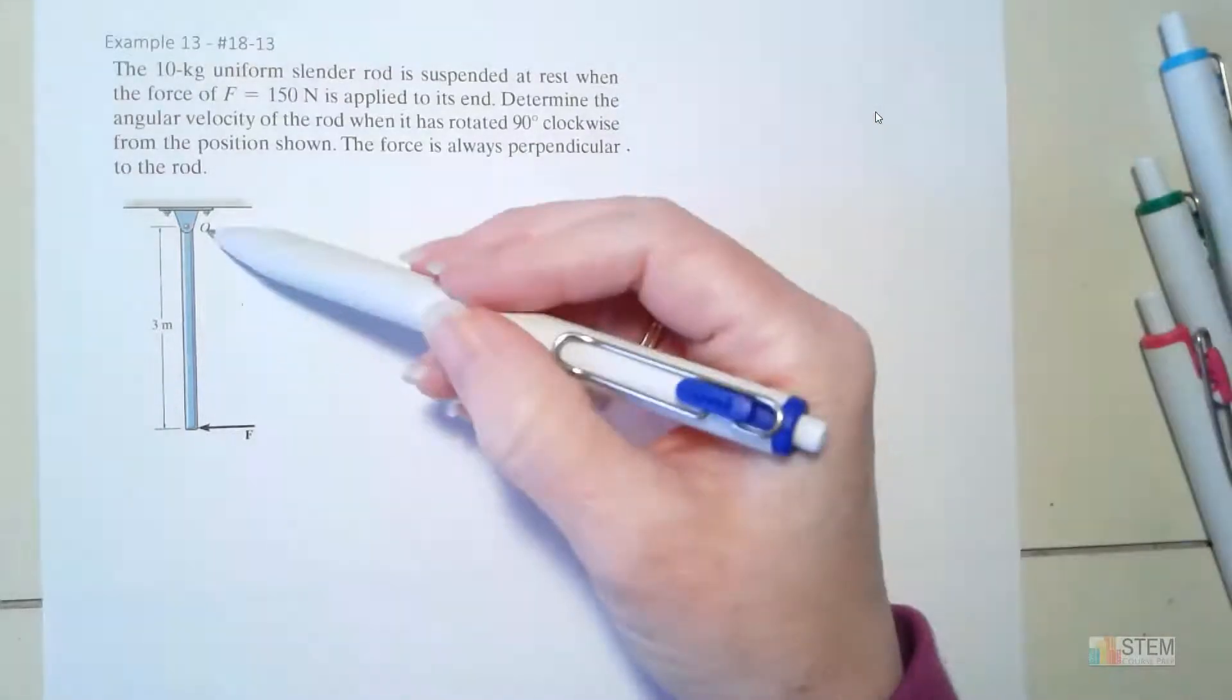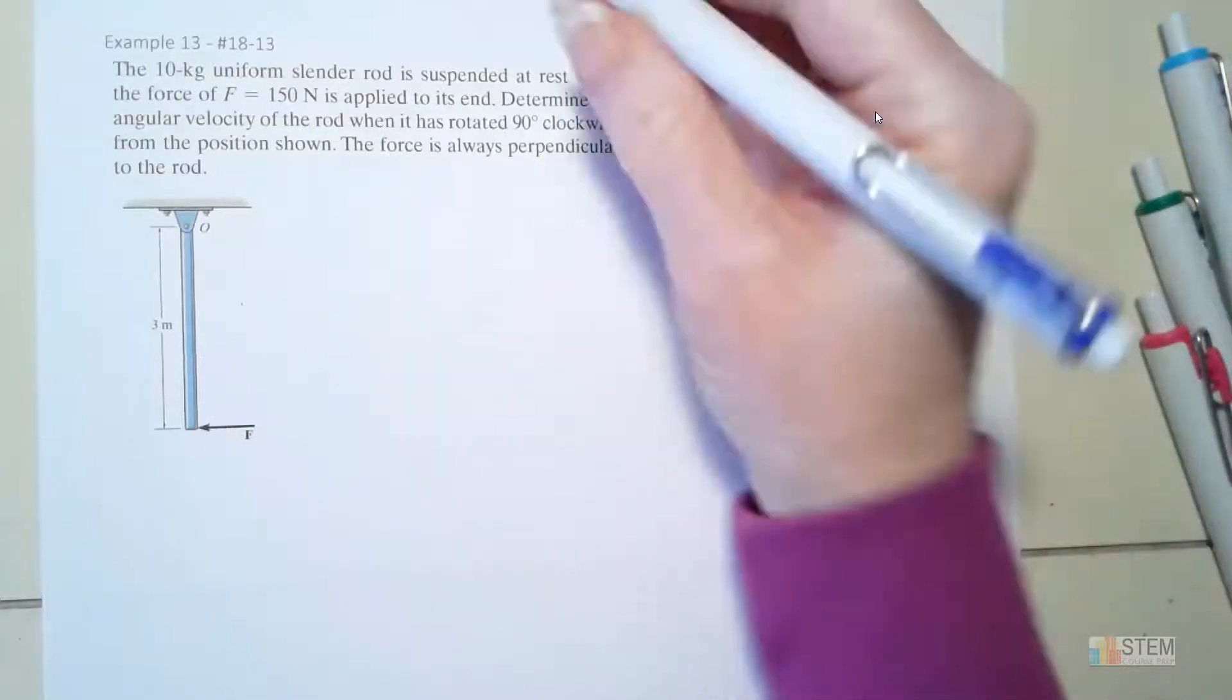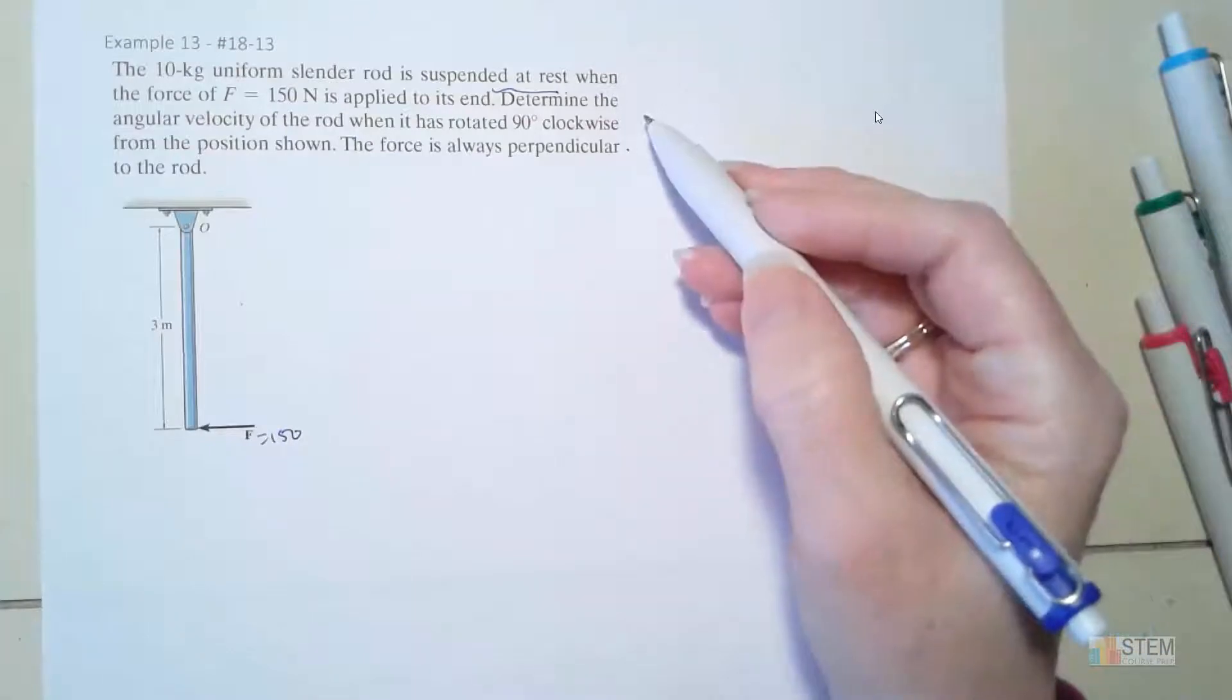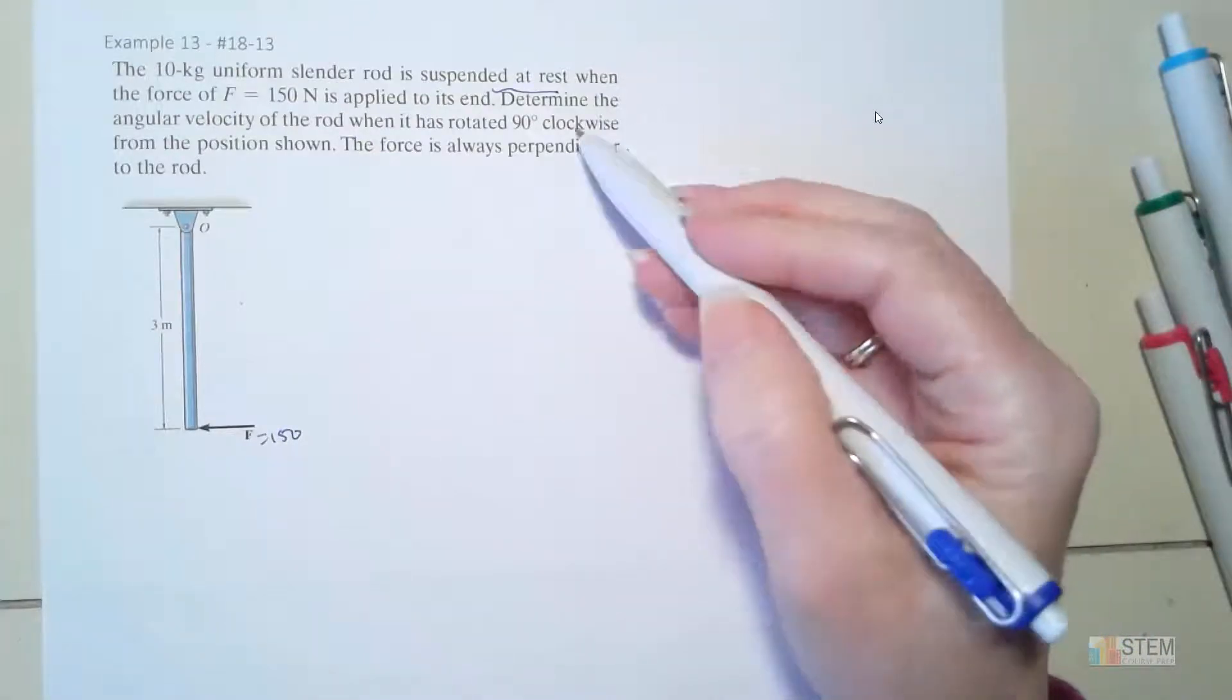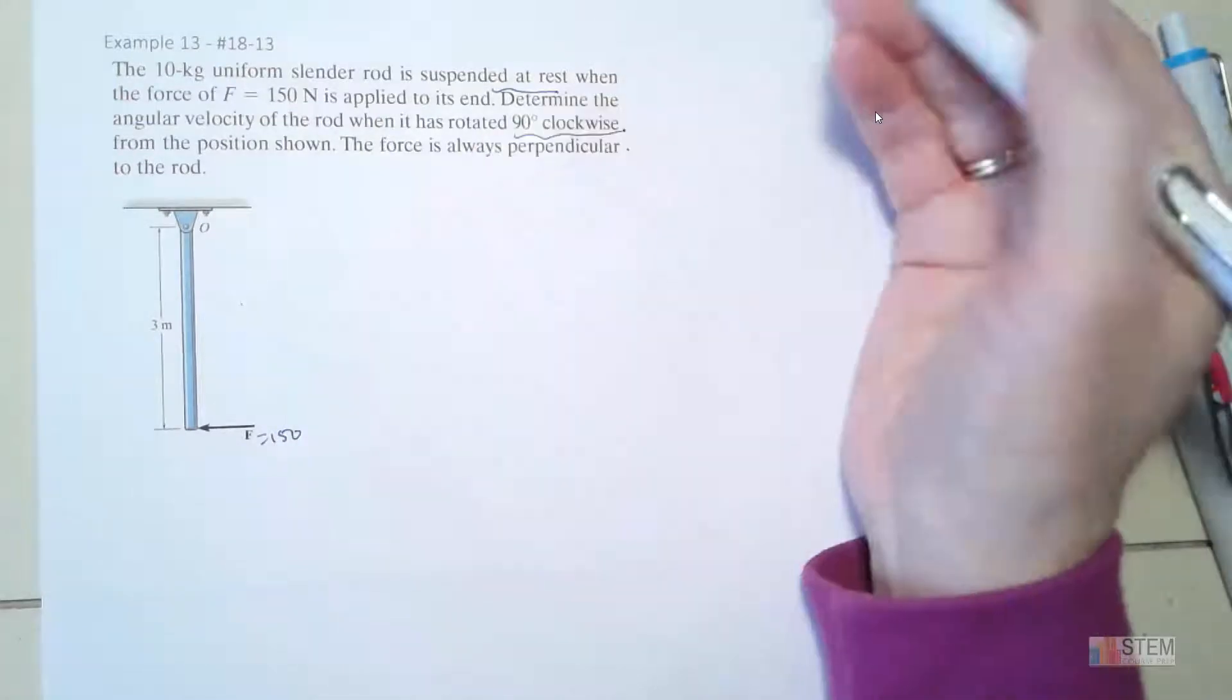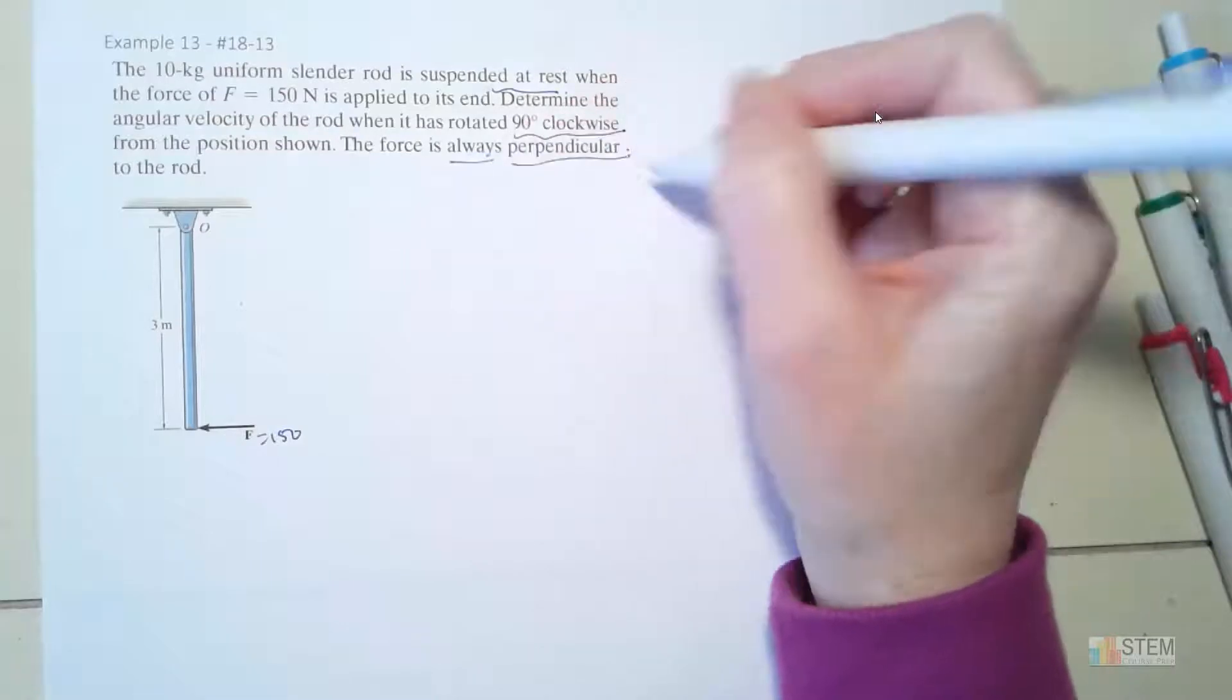So what we've got is this uniform slender rod, it's got a mass of 10 kilograms, it's suspended at rest, when the force of 150 N is applied to the end. Now we want to find the angular velocity of the rod when it's rotated 90 degrees clockwise from this position shown.